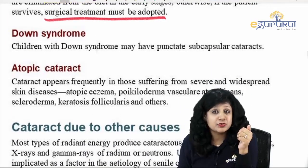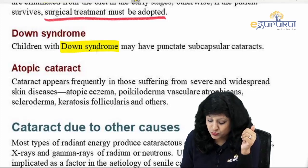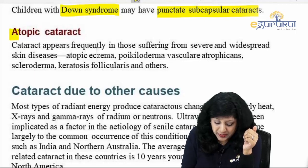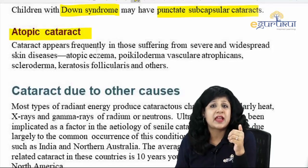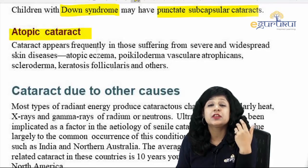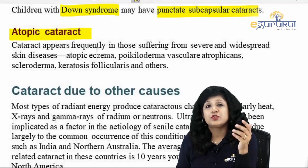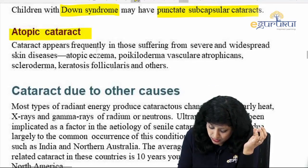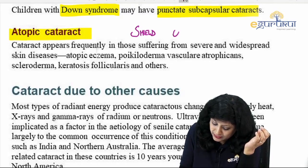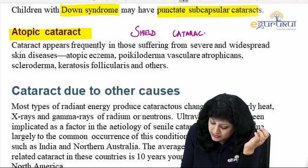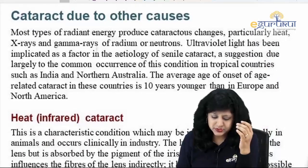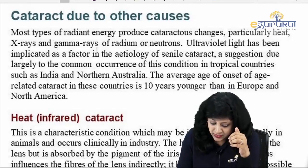Other systemic causes include Down syndrome — children with Down syndrome have punctate opacities. We also have atopic cataract: patients with dermatogenic diseases like atopic dermatitis can develop cataract. Cataract in atopic dermatitis is also called shield cataract.